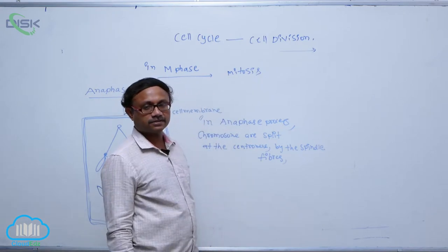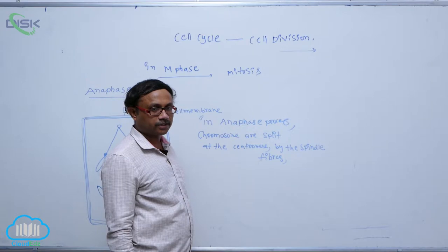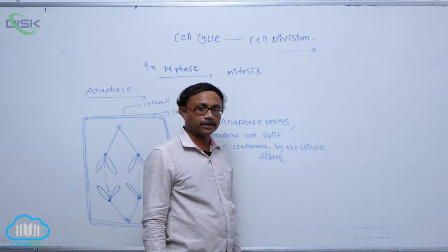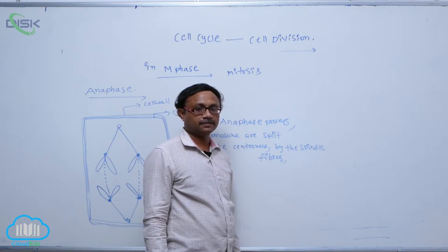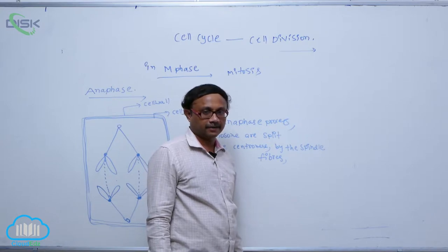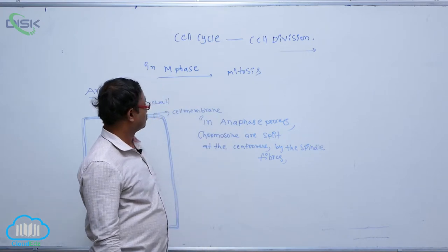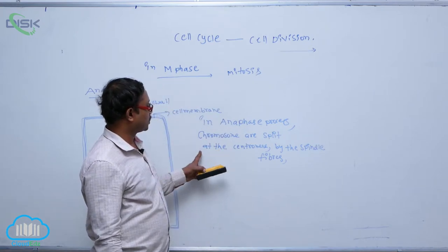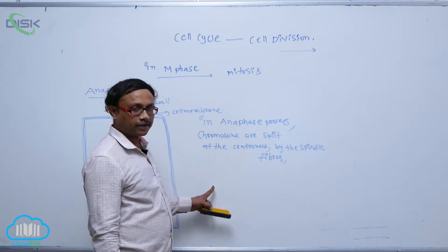In metaphase, spindle fibers attach to the chromosomes to form the bipolar spindle apparatus. The bipolar spindle apparatus is formed in metaphase. After that, in anaphase, chromosomes are split at the centromere by the spindle fibers.